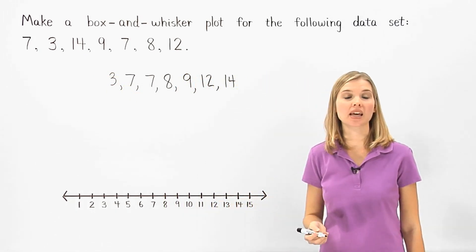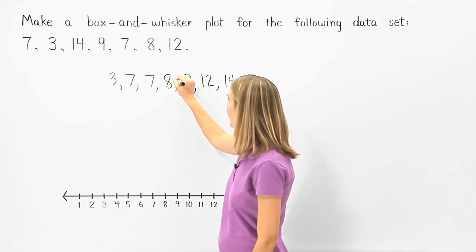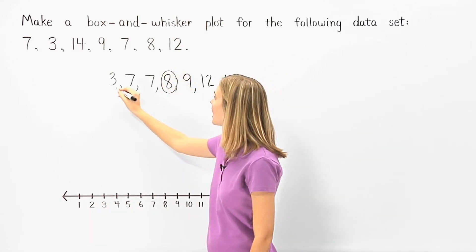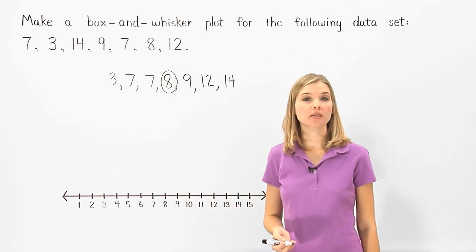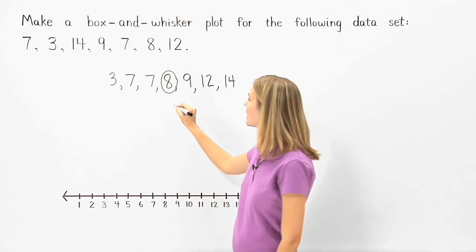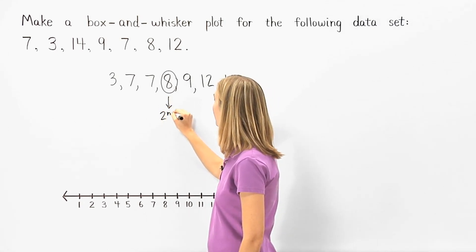Next, we find the median or middle number of our data set, which in this case is 8, because 8 has 3 numbers on either side of it. In a box and whisker plot, however, the median is called the second quartile. So 8 is the second quartile.